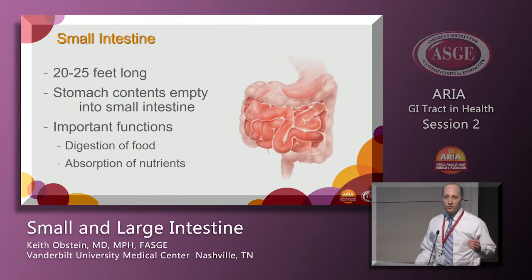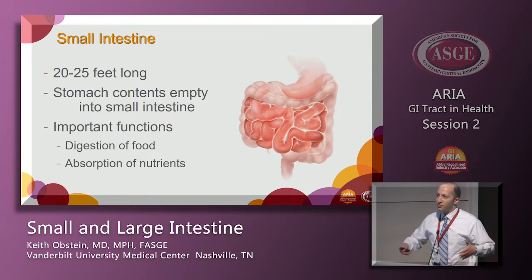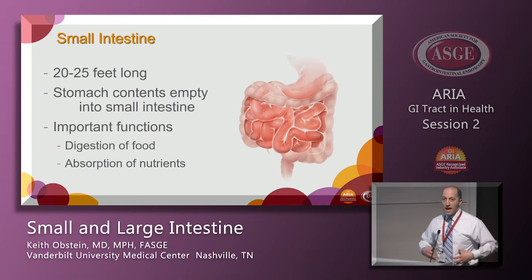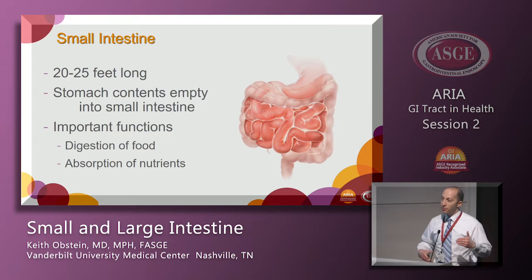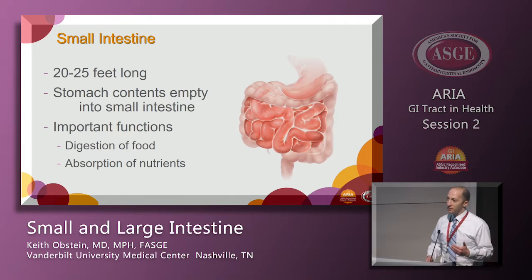The small intestine is about 20 to 25 feet in length, and it loops back and forth in everybody's abdomen. No matter if you're a large frame or a small frame, you still have the same distance in there, because it's compact and folded on each other in the abdomen. The stomach empties its contents through the pylorus, and then it enters into the small intestine.